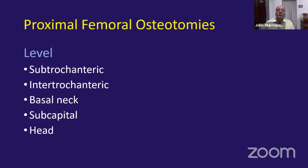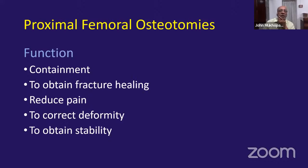Although we are not going to cover femoral osteotomies today, I'll briefly look at how we classify them — according to level, starting from below going proximally: subtrochanteric, intertrochanteric, basal neck, subcapital, and even femoral head osteotomies such as the femoral head reduction osteotomy. Another way to classify proximal femoral osteotomies is by function: containment, like a varus osteotomy for Perthes or CDH; fracture healing; pain reduction; deformity correction; or improving stability.